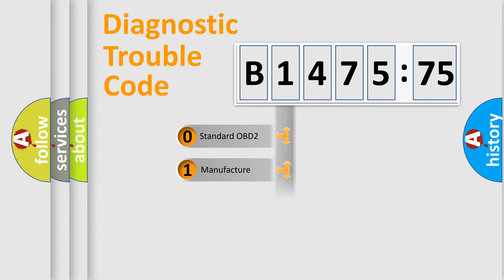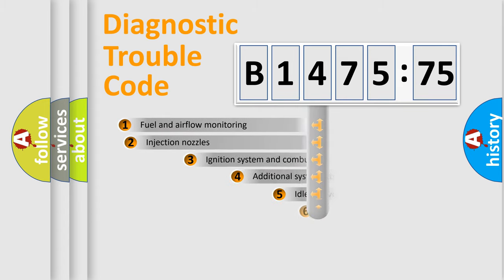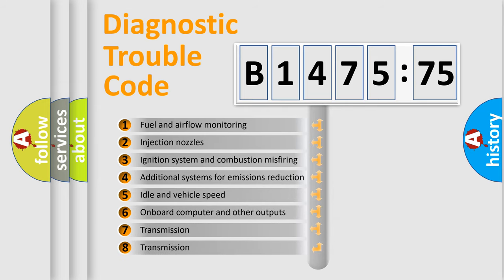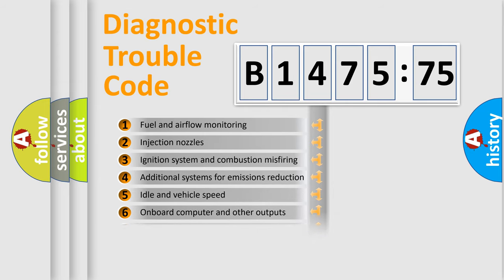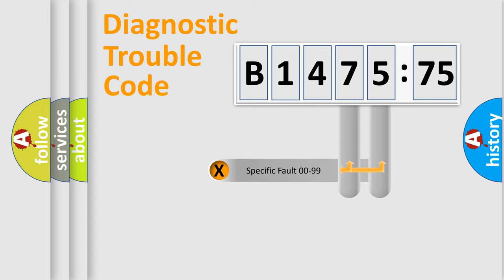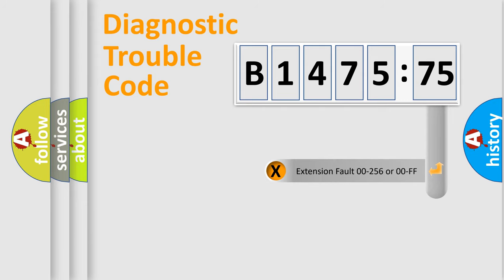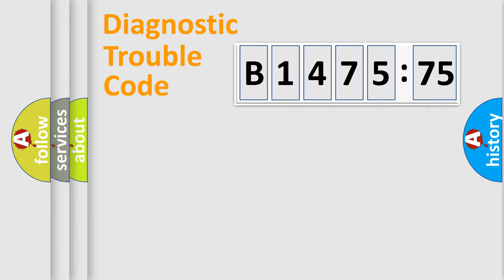If the second character is expressed as zero, it is a standardized error. In the case of numbers 1, 2, or 3, it is a more specific expression of a car-specific error. The third character specifies a subset of errors. This distribution shown is valid only for the standardized DTC code. Only the last two characters define the specific fault of the group.